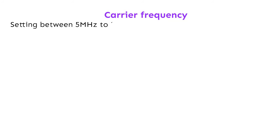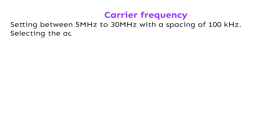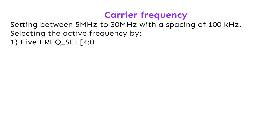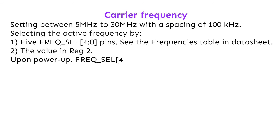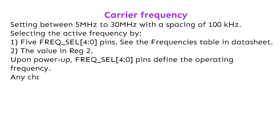The carrier frequency can be set between 5 to 30 MHz with a spacing of 100 kHz. The active frequency is selected either by the 1-to-5 frequency select pins — see the frequencies table in the datasheet — or by the value in reg 2. Upon power up, the frequency select pins define the operating frequency, and any change in these pins or reg 2 updates the carrier frequency.